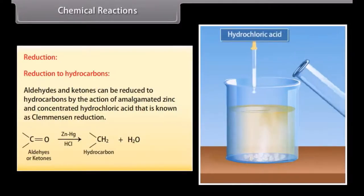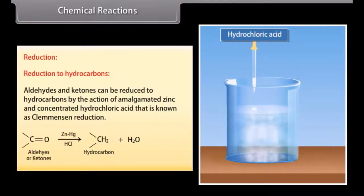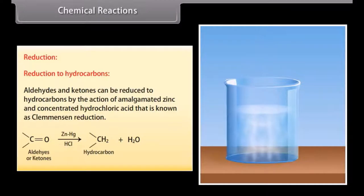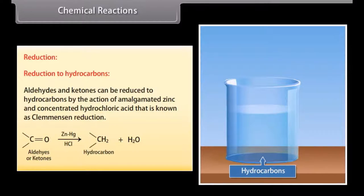Aldehydes and ketones can be reduced to hydrocarbons by the action of amalgamated zinc and concentrated hydrochloric acid. This is known as Clemmensen reduction.